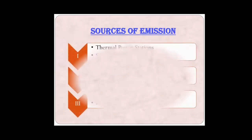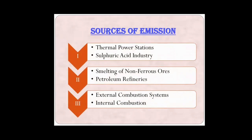We begin with the sources of emission. The first one we talk about is thermal power stations. These are the major sources of sulfur dioxide. Combustion of fossil fuels in thermal power stations produces sulfur dioxide, which is released into the atmosphere. Next is sulfuric acid industry. During the manufacture of sulfuric acid, generally done by means of the contact process, the second step is oxidation of sulfur dioxide to sulfur trioxide. Around 96 to 98% of sulfur dioxide is converted into sulfur trioxide, which is then further converted into sulfuric acid. So that means 2 to 4% sulfur dioxide is being released into the atmosphere.